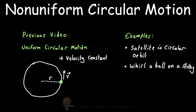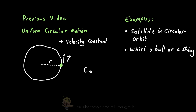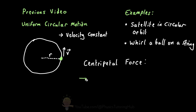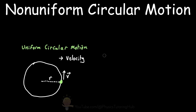The centripetal force — also called the radial force — acting on such objects is described by the same formula: centripetal force equals the object's mass multiplied by its velocity squared, divided by the radius of the circle. In this video, we're going to talk about situations when this circular motion is non-uniform, meaning the object's speed changes as it moves around the circle.